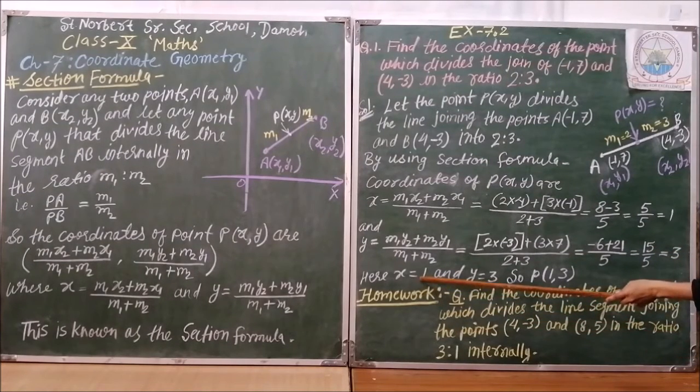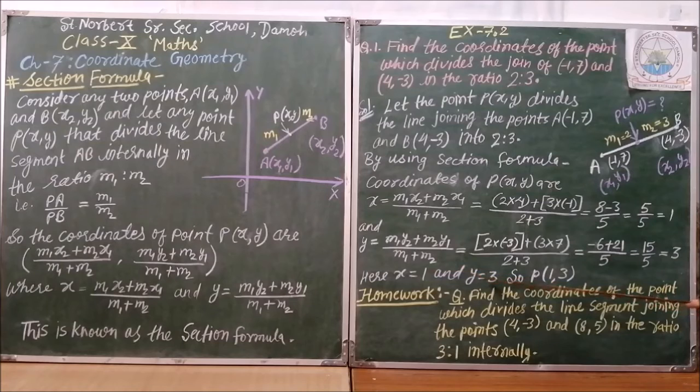Here, we will get x equals to 1 and y equals to 3. So, coordinates of P is 1 comma 3.